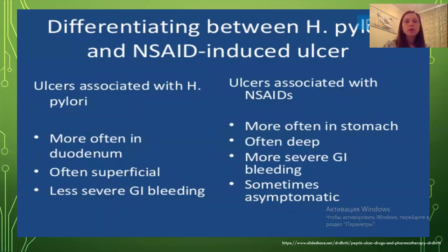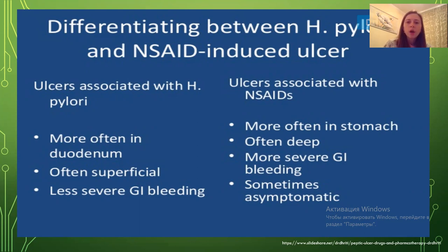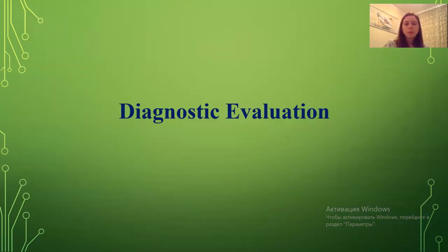Differentiating between H. pylori and NSAID-induced ulcer: ulcers associated with H. pylori are more often in the duodenum, often superficial, with less severe gastrointestinal bleeding. Ulcers associated with NSAIDs are more often in the stomach, often deep, with more severe gastrointestinal bleeding, and sometimes asymptomatic.